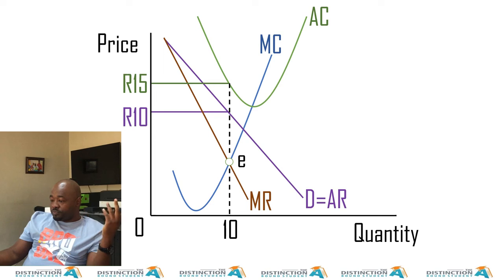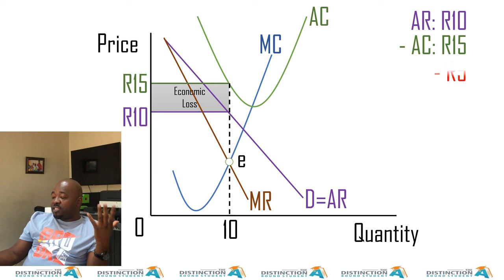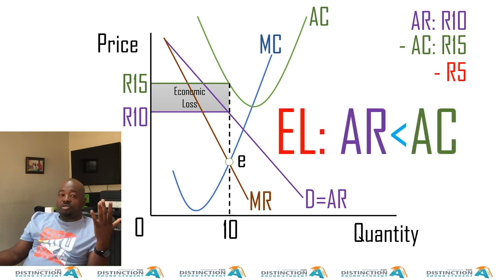Moving on. Let's find out why we say it's an economic loss. It is an economic loss because 10 minus 15 is negative 5. And negative 5 shows that this is problem. So this is an economic loss. AR is less than AC.